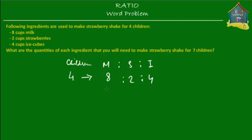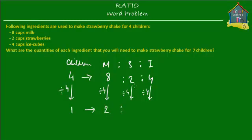So how much is each child going to need? Each child needs each of these divided by four — milk divided by four, strawberries divided by four, ice cubes divided by four, and children divided by four as well. So one child is going to need eight divided by four, which is two cups of milk; two divided by four, which is half a cup of strawberries; and four divided by four, which is one cup of ice cubes. So for a single child, the ratio is two to half to one.